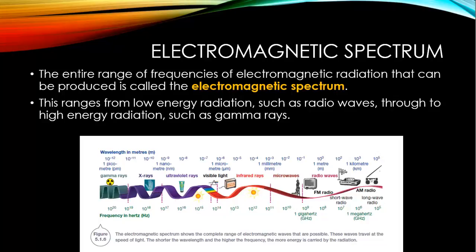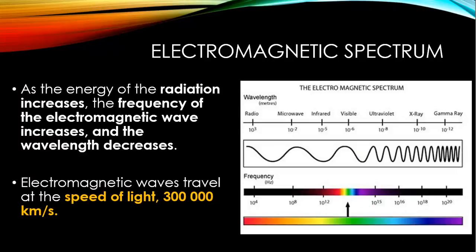You can see visible light is about in the center. As energy of the radiation increases, the frequency of electromagnetic waves also increases and the wavelength decreases. Electromagnetic waves travel at the speed of light — that's 300,000 kilometers per second. You can see in the illustration that the wavelength increases with radio waves and then decreases when you get to those higher energy waves called gamma rays on the other end of the spectrum.